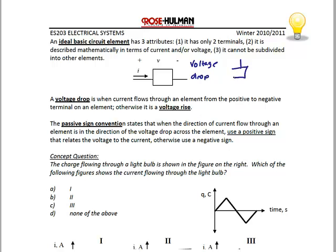Another example of an element drawn to be a voltage drop: the current is going out of the top, but that means the source of that current had to be at the bottom, which means the current flows from the positive terminal to the negative terminal — so that's also a voltage drop. Now let's look at an example of a voltage rise. I have positive on top, negative on the bottom, and here's the current that goes into the negative terminal and exits the element through the positive terminal. This would be a voltage rise.